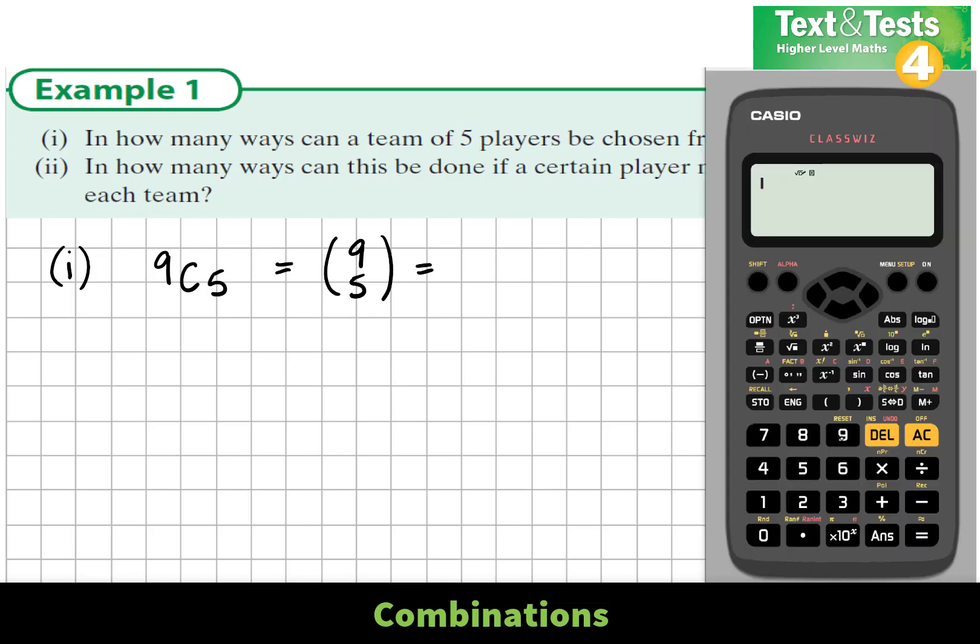On the calculator, if you write in 9, the C button is the second function of the division button. So 9C5 and that equals 126.